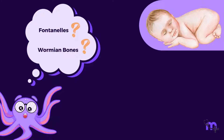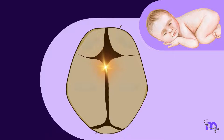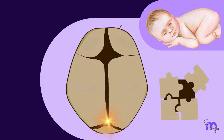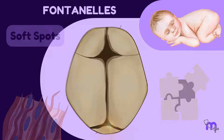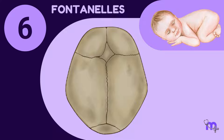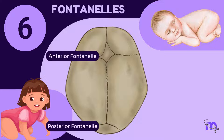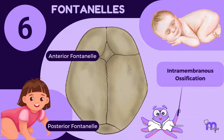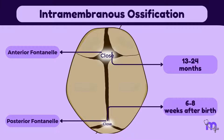At birth, the newborn's skull consists of five major bones: two frontal, two parietal, and one occipital. The bones that shape the cranium begin unfused, leaving several gaps between the individual bones of the infant skull. These gaps are composed of membranous connective tissue and are known as fontanels, often referred to as soft spots. Six fontanels are present during infancy, with the most notable being the anterior and posterior fontanels. As growth and development continue, each fontanel will close within their respective timelines by a process known as intramembranous ossification. The average closure time of the anterior fontanel ranges from 13 to 24 months, while the posterior fontanel completely closes within about 6 to 8 weeks after birth.